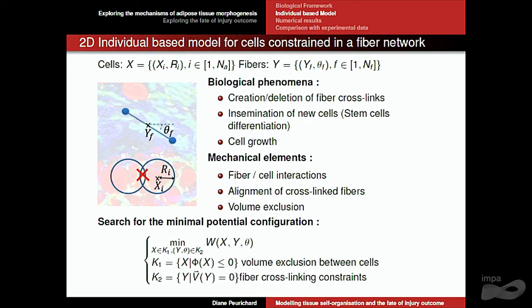How do we obtain the equations of motion? The mechanical elements define a global potential of the system comprising all three types of interaction. Volume exclusion between cells is a constraint — cells can never overlap — and it is an inequality constraint in the minimization problem. The crosslinking constraint — that fibres can move and turn but must keep their attachment site — is also a constraint, treated as a hard-core potential. We suppose that elements move towards the minimization of the total energy, defined by the mechanical elements. It is a minimization under constraint, a non-convex problem, so mathematically we cannot guarantee a unique solution and we solve it numerically.